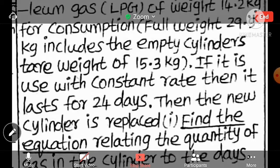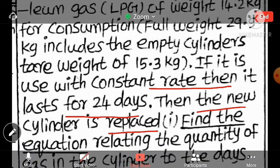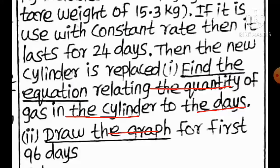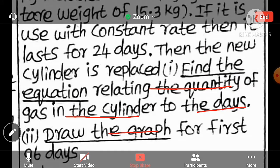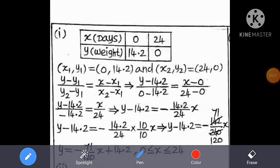If it is used with constant rate then it lasts for 24 days, then the new cylinder is replaced. One cylinder will last for 24 days. So first point is x days, that is what we are doing here.